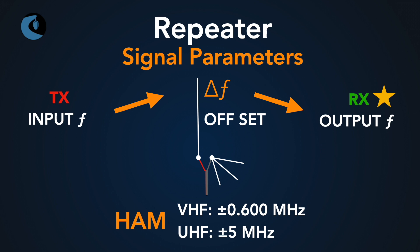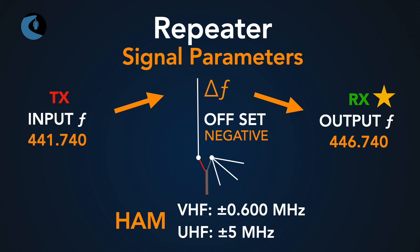On the UHF side, frequencies reported for a repeater are always centered on the receive frequency. Say our receive frequency is 446.740 megahertz and it has a negative offset. We subtract five megahertz, giving us an input frequency of 441.740 megahertz — a common pairing you'll find. This is convention, not a requirement. So if you see a repeater listing with a plus or minus: for VHF, add or subtract 0.6 megahertz; for UHF, add or subtract five megahertz.